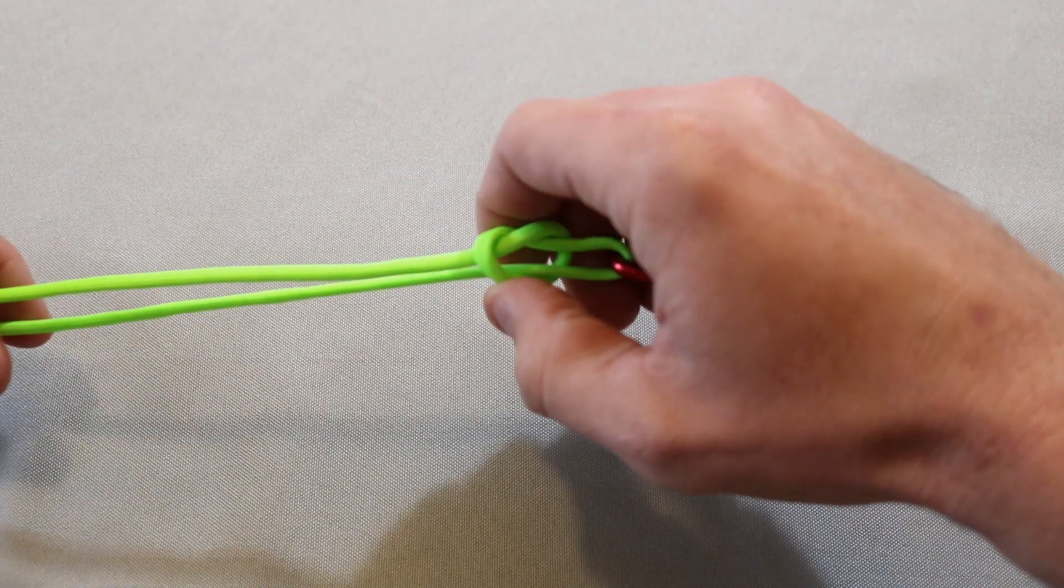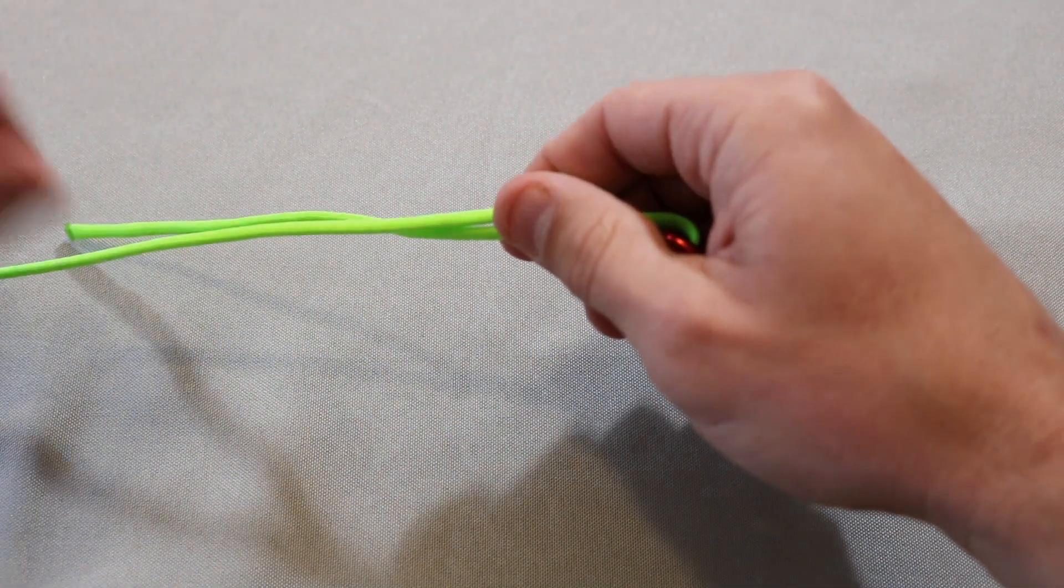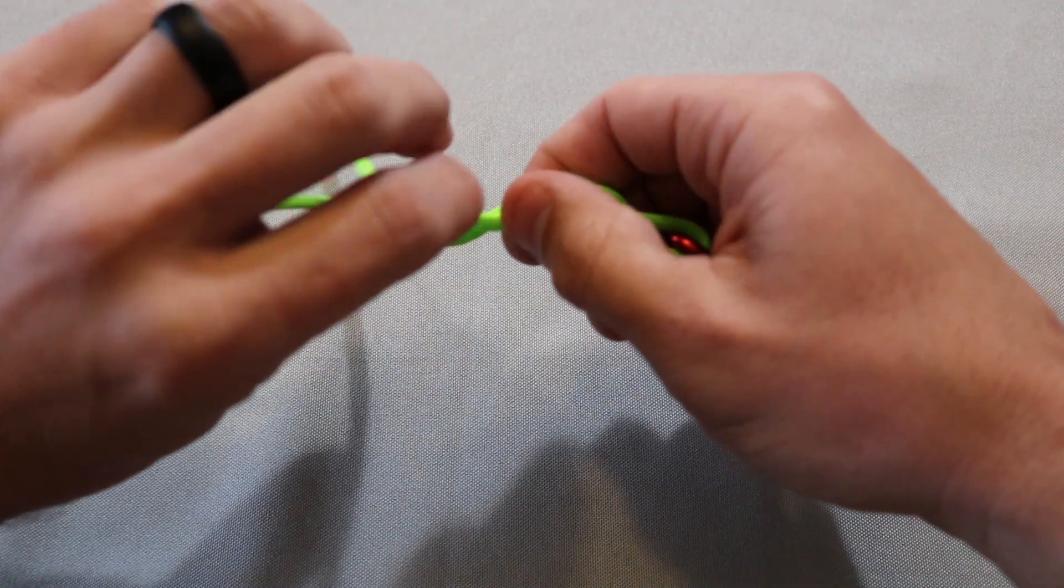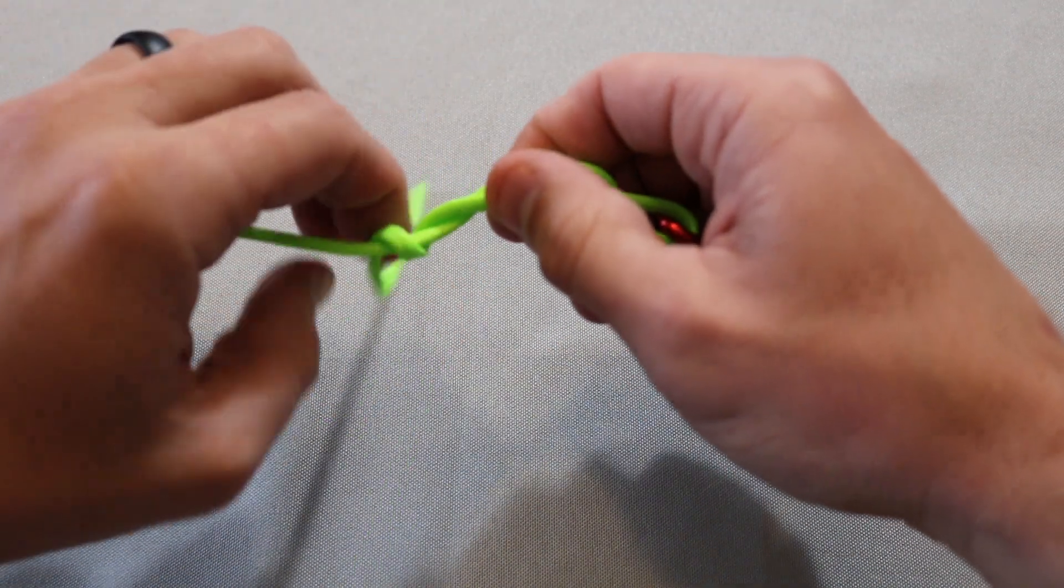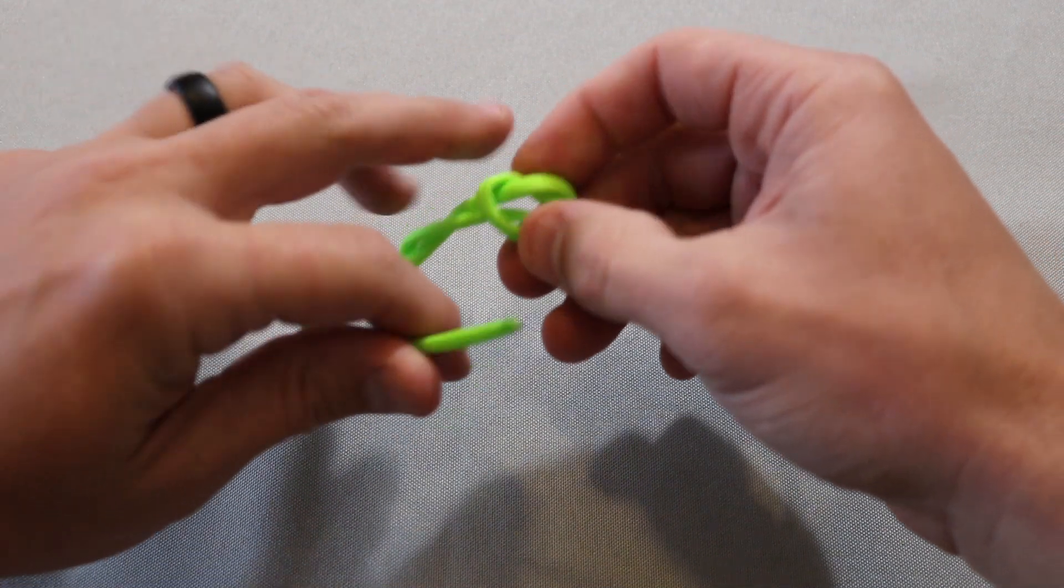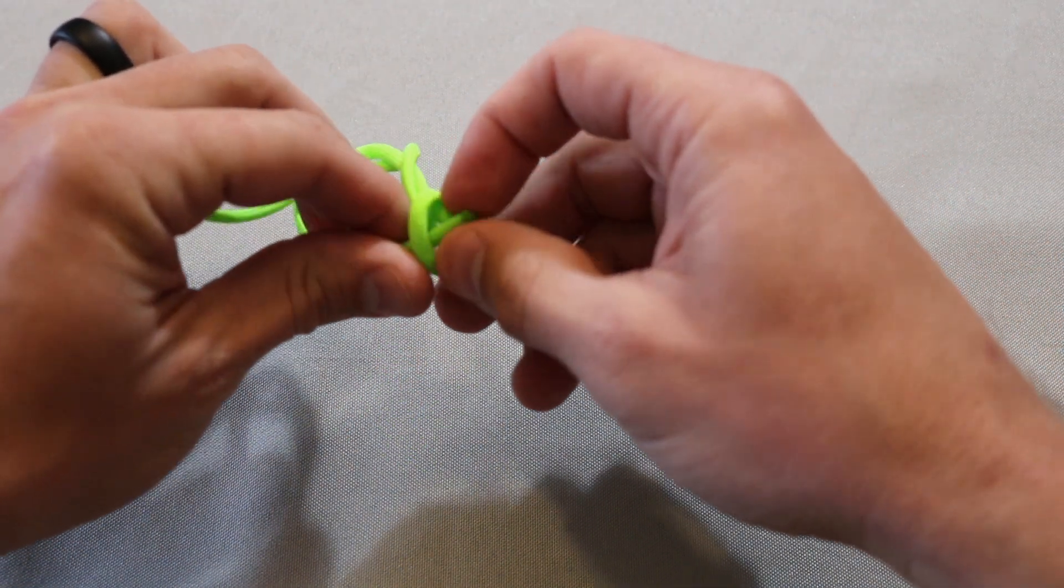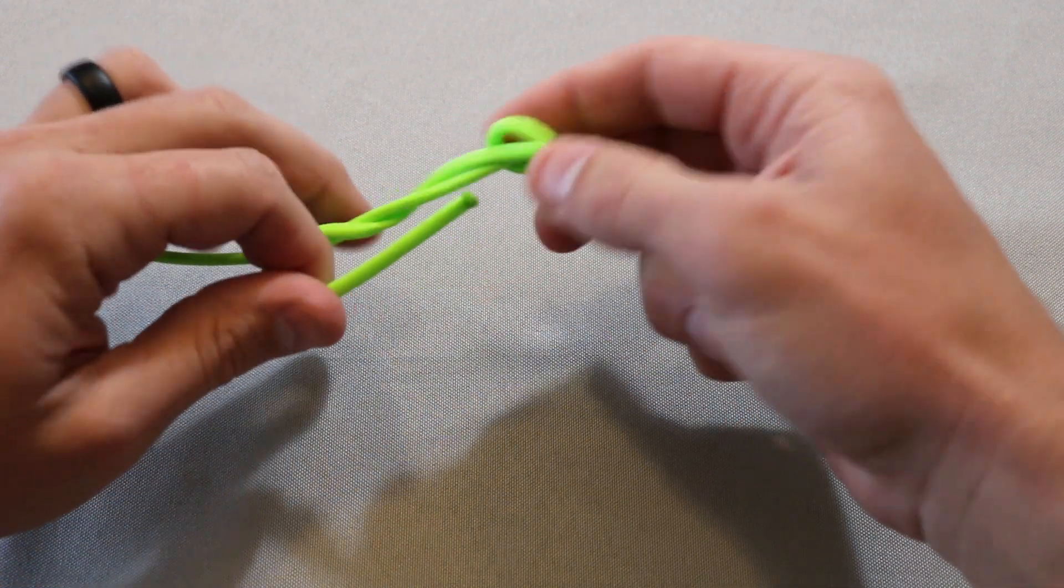You bring that all the way up pretty much, and then you're going to wrap this tag line around your main line three times. I'm only going to do it twice for this demonstration just because it gets a little hard with the paracord, and then you're going to go back through that overhand knot.